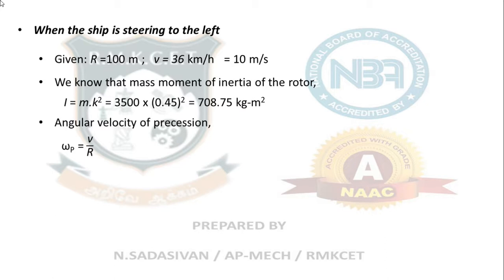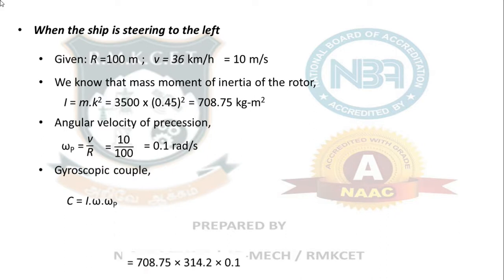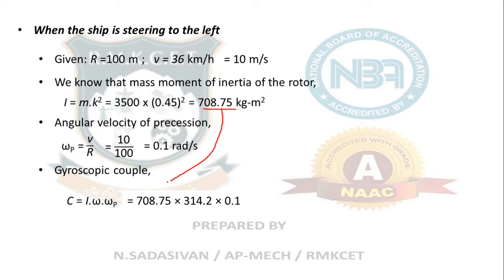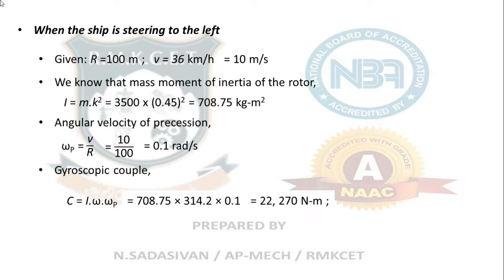The angular velocity of precession is omega_p = v/r. The ship is steering left, the rotor spins at 3000 rpm (314.2 rad/s). Omega_p = 10/100 = 0.1 radians per second. So the gyroscopic couple C = I × omega × omega_p = 708.75 × 314.2 × 0.1 = 22,270 Newton meters, or 22.27 kilonewton meters.